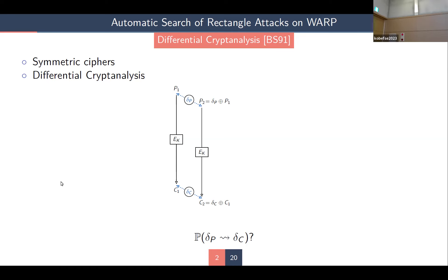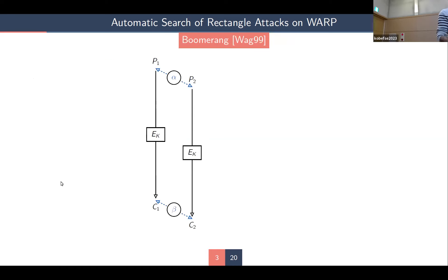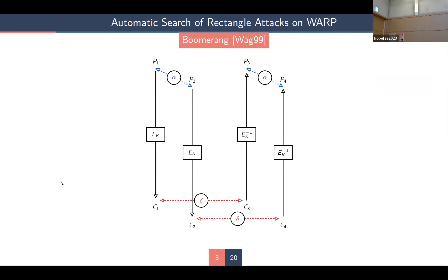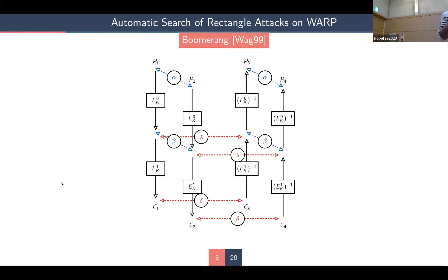A variant was designed by Wagner: the boomerang attack. In the boomerang setting, instead of computing the probability from alpha to beta, we choose an output difference delta and compute the probability that deciphering two pairs C3 and C4 returns alpha. To compute this, we separate the cipher into two sub-functions E0_K and E1_K, computing one upper trail from alpha to beta and one lower trail choosing lambda and delta as differences.